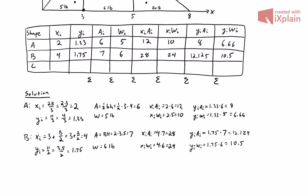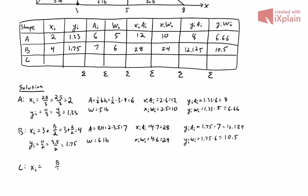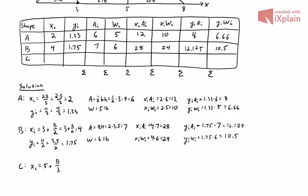Last is shape C, the remaining triangle. The x centroid base equation is base over three, but this triangle starts at x equals five, so it's five plus three over three, giving us six. The y centroid equation is height over three: 3.5 over three gives us 1.17. The area is one-half base times height — one-half times three times 3.5 — giving an area of 5.25. The weight is 20 pounds as written on the figure.